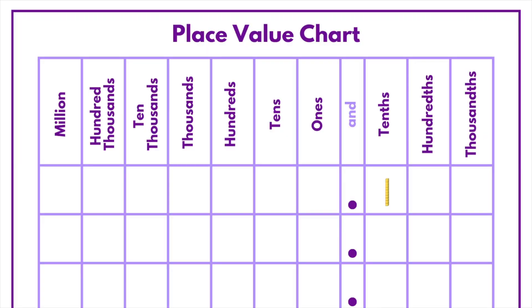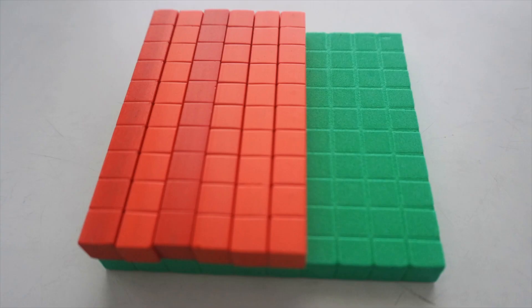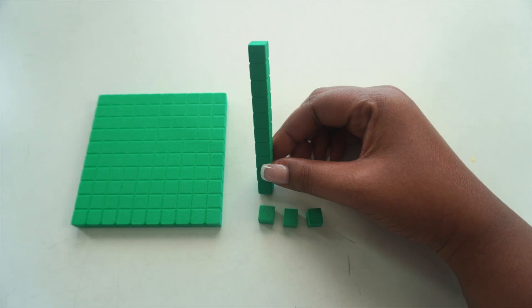You can use rods to show tenths, units to show hundredths, and compare both to flats that can represent one whole. This makes decimals much easier to picture.